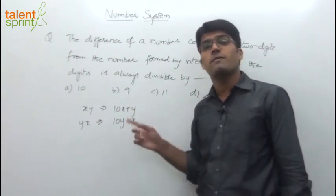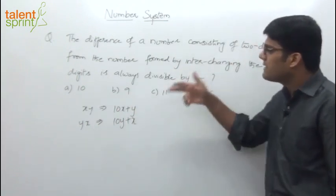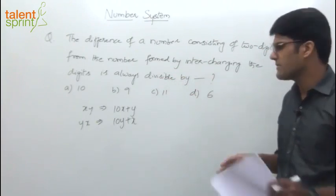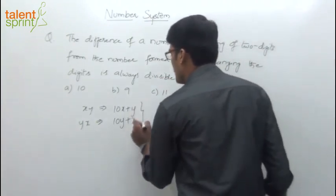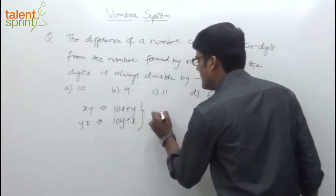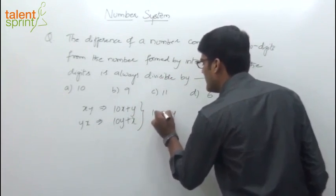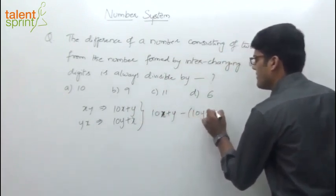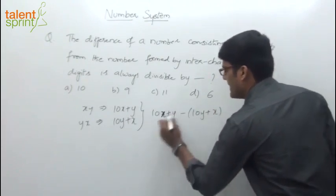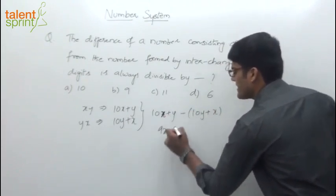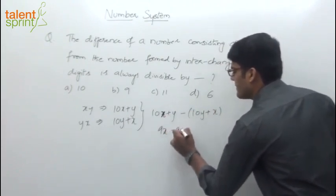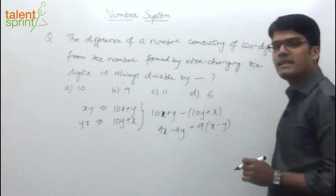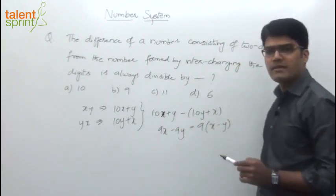We have to find out the difference, and see — this difference is divisible by which of the given answer options. Just take the difference of these two values: we get 10x plus y minus 10y plus x. So 10x minus x is 9x, y minus 10y is minus 9y. And if you take 9 common from this, what do you get? x minus y — that is 9 times (x minus y).